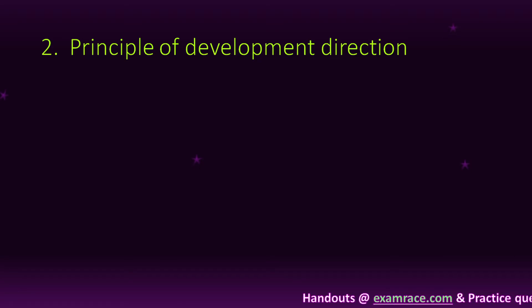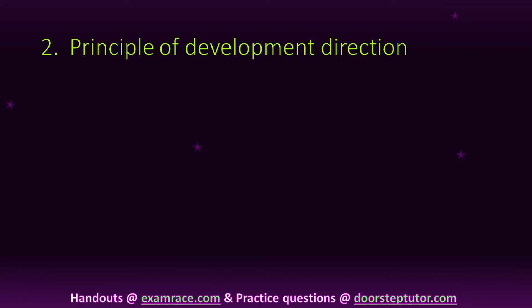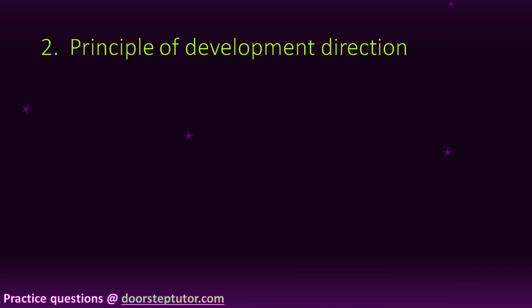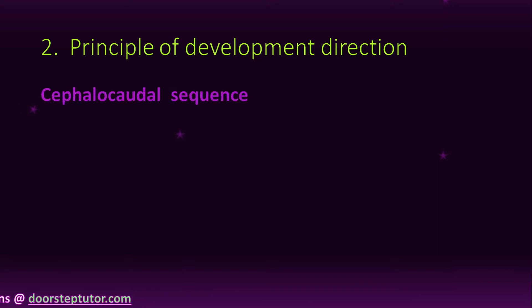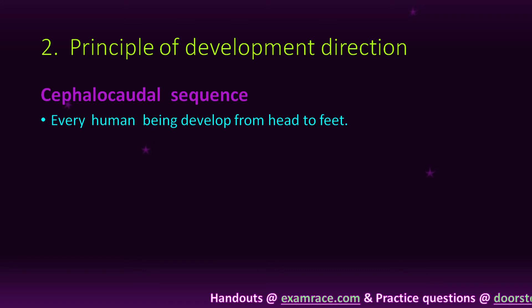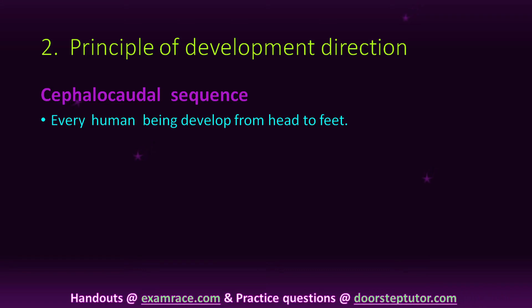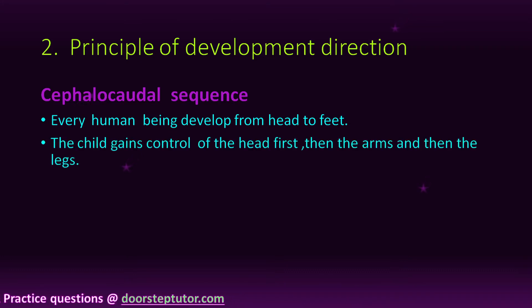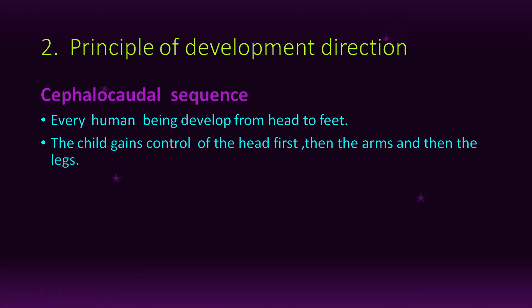The principle of development of direction is divided into two parts: cephalocaudal sequence and proximodistal sequence. In the cephalocaudal sequence, every human being develops from head to feet. The child gains control of the head first, then the arms, and then the legs.